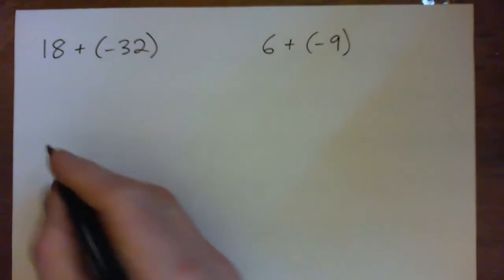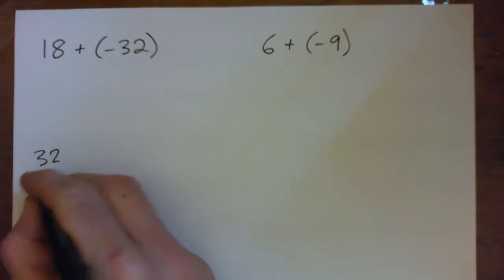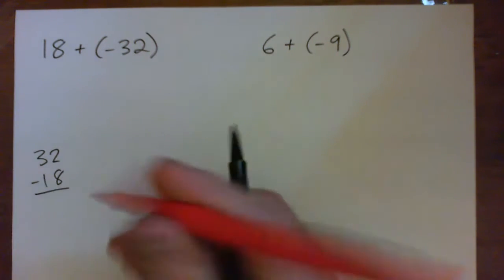One way to do this is just go 32 subtract 18. And we go like this.